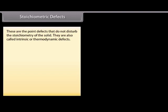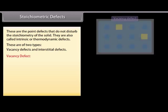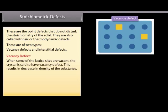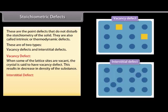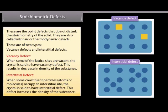Stoichiometric defects are point defects that do not disturb the stoichiometry of the solid. They are also called intrinsic or thermodynamic defects. These are of two types: (1) Vacancy defect — when some lattice sites are vacant, the crystal has a vacancy defect, which results in a decrease in density of the substance. (2) Interstitial defect — when some constituent particles occupy an interstitial site, increasing the density of the substance.